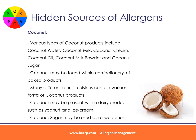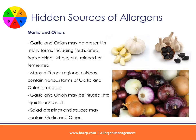Garlic and onion: garlic and onion may be present in many forms, including fresh, dried, freeze-dried, whole, cut, minced, or fermented. Many different regional cuisines contain various forms of garlic and onion products. Garlic and onion may be infused into liquids such as oil. Salad dressings and sauces may contain garlic and onion.